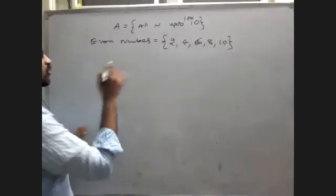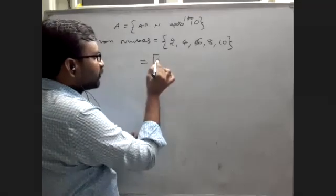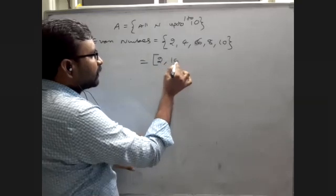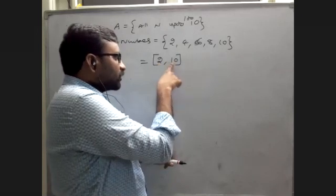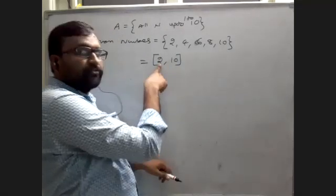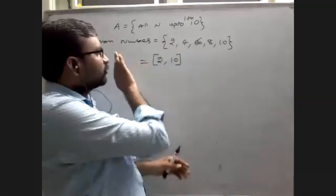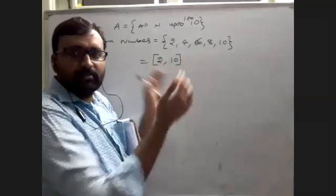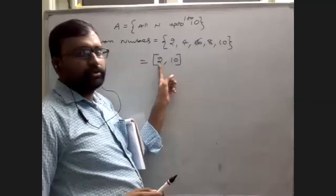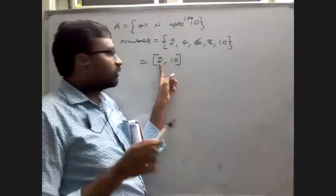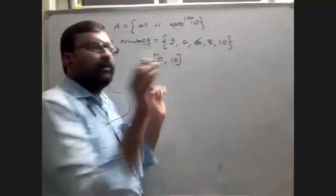If you use closed brackets [2, 10], you write the start and end — all even numbers from 2 to 10 are included: 2, 4, 6, 8, 10. Both 2 and 10 are included. That is the meaning of closed brackets — include the boundary values.